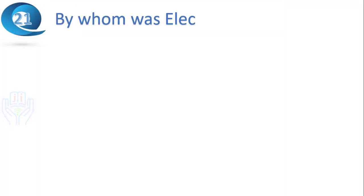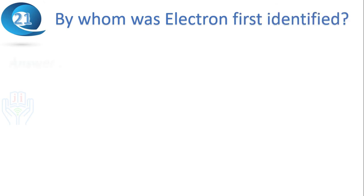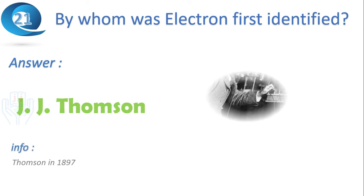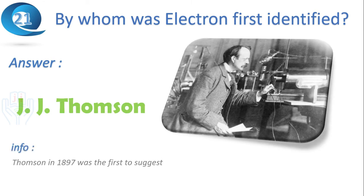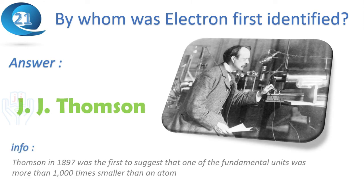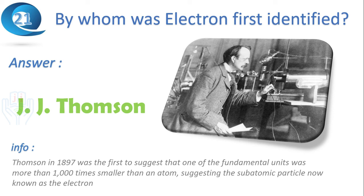Next question: by whom was the electron first identified? Answer: J.J. Thomson. In 1897, Thomson was the first to suggest that one of the fundamental units was more than a thousand times smaller than an atom, suggesting the sub-atomic particle now known as the electron.